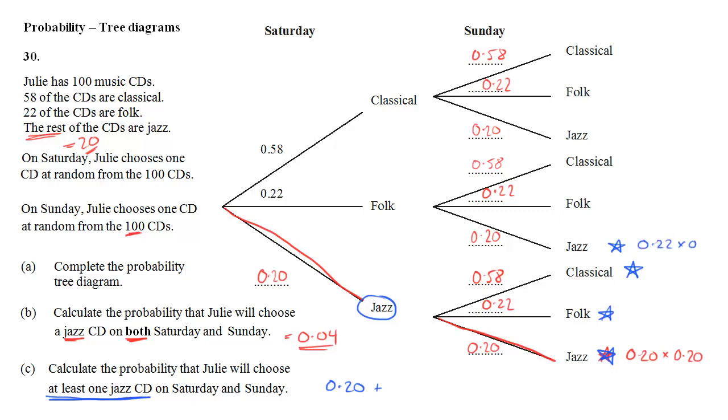Secondly, we want to include choosing folk on the first day and then jazz. So that's 0.22 times 0.20. The third option is if she chooses classical on the first day and then jazz, so multiplying along there, 0.58 times 0.20. That gives me 0.116. So I add together those three things and get 0.36. That is my answer.